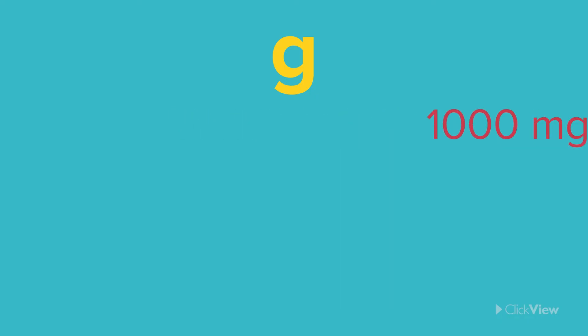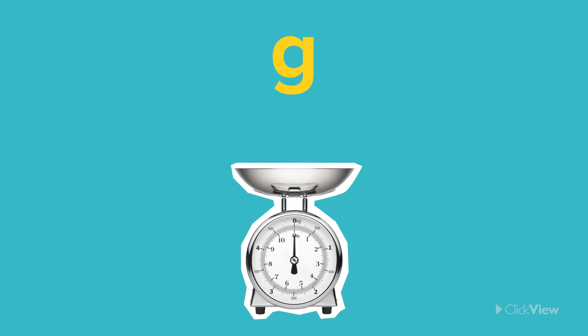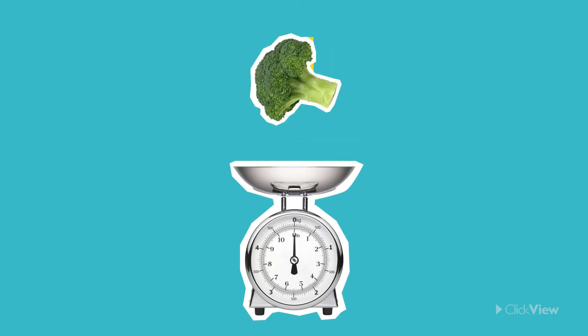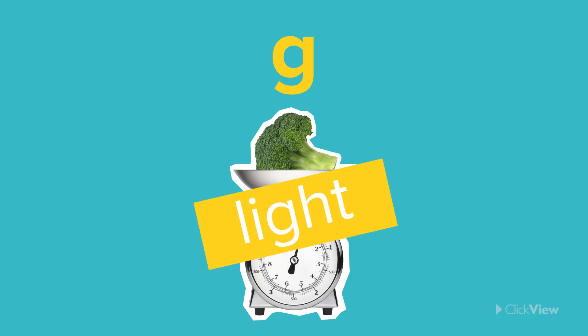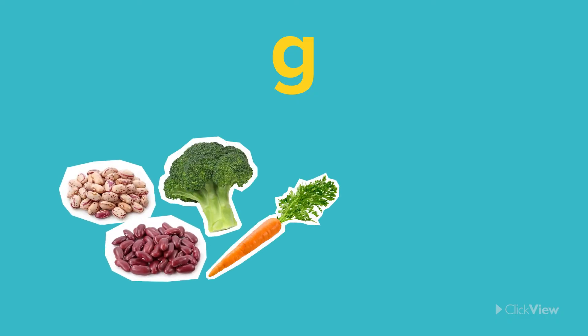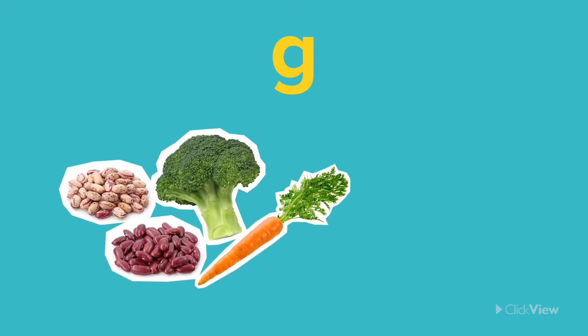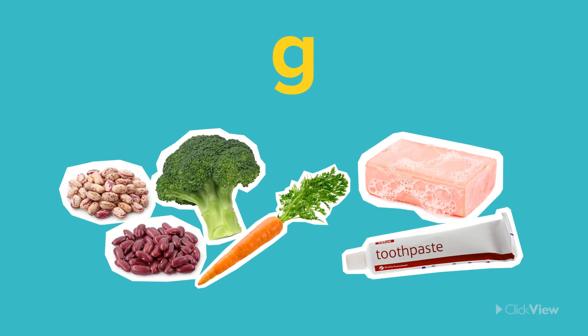The gram is a very common unit of measurement for things that don't have much mass. If something doesn't have much mass, it is light. Things we measure in grams include small amounts of food like beans or vegetables, and things like toothpaste and bars of soap.